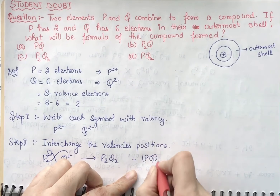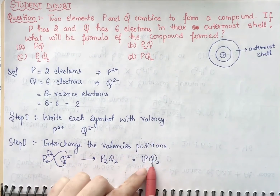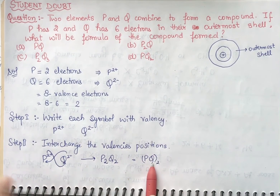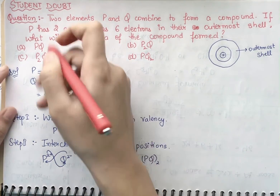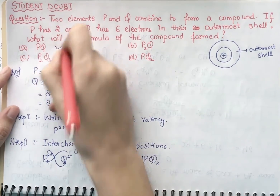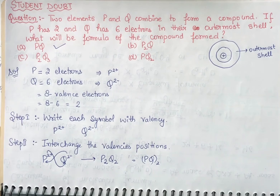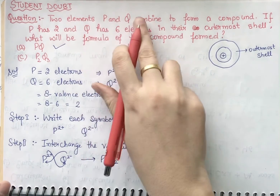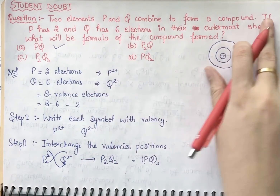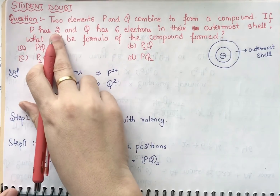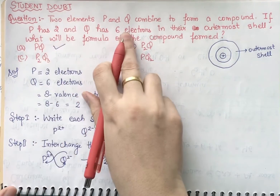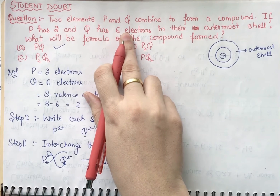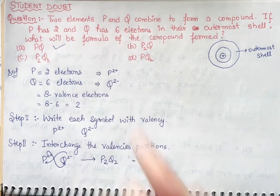The possible compound is PQ, so option A is the right answer for P and Q having two electrons and six electrons respectively in their outermost shell.